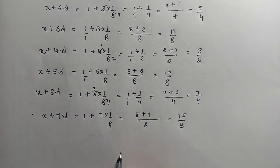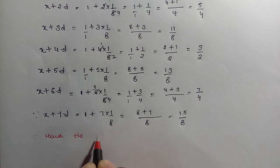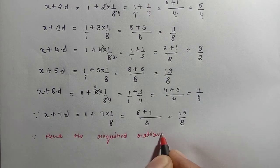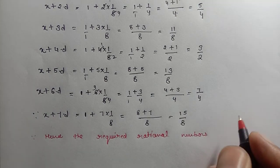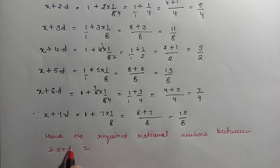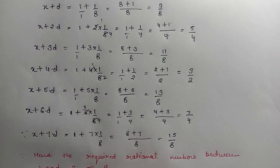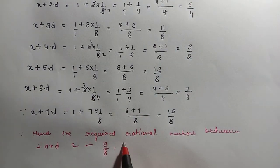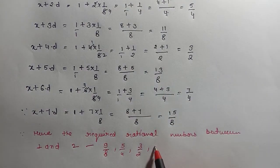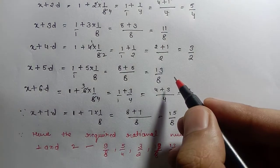So we have found all 7 rational numbers here. Hence, the required rational numbers between 1 and 2 are: first 9 by 8, second 5 by 4. Let me rewrite them clearly here.